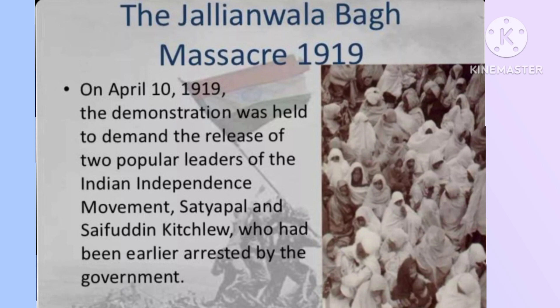The Jallianwala Bagh had high walls and only a small door — there was no chance to go out at all except through that small entrance. General Dyer arrived at this place without any previous warning, with his armed force. He shut the small door and attacked the protesters. Thousands suffered severe injuries. From all sides there were firearms and bombs. It is reported in history that about 379 people died and thousands suffered serious injuries. This incident is also known as the Jallianwala Bagh tragedy.